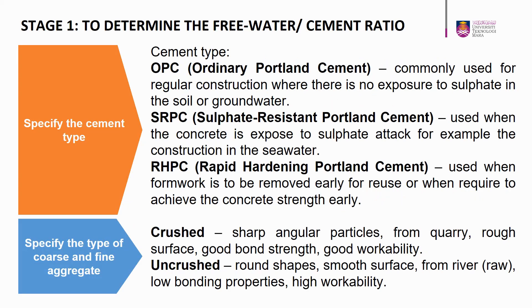Next, we need to specify the cement type. There are three common types of cement: OPC stands for ordinary Portland cement, SRPC stands for sulfate-resistant Portland cement, and RHPC stands for rapid hardening Portland cement. OPC is commonly used for regular construction where there is no exposure to sulfate in soil or groundwater. SRPC is used when the concrete is exposed to sulfate attack, for example in seawater construction, and RHPC is used when formwork is to be removed early for reuse or to achieve concrete strength early.